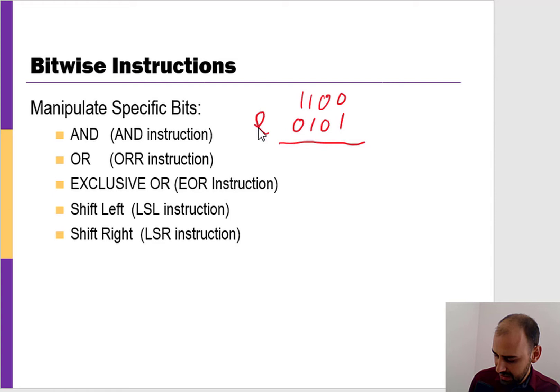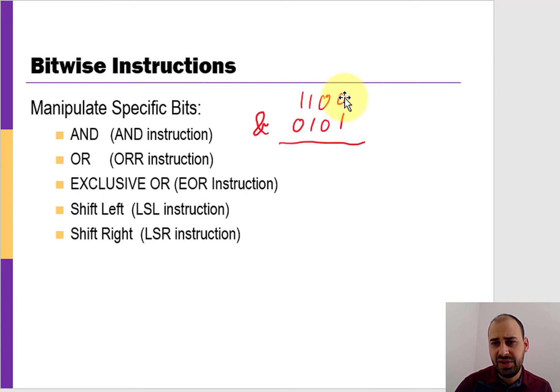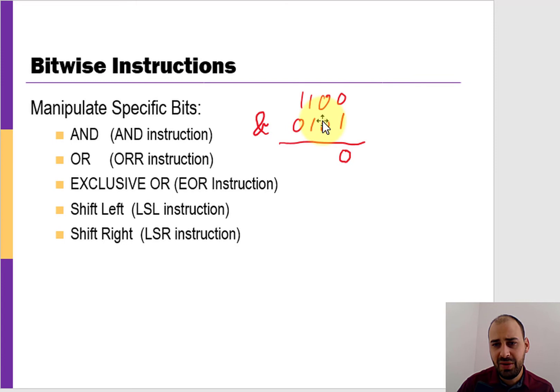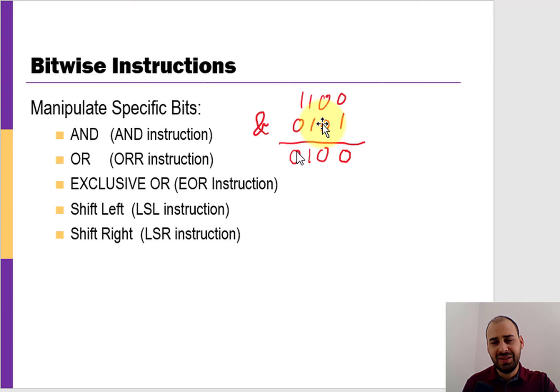If I do an AND operation, I'm looking at each bit one at a time and ANDing each bit together. So the rightmost zero ANDed against one is going to be zero, then zero and zero is zero, one and one is one, and one and zero is zero. Bitwise, we're comparing each bit — they're lined up one at a time.